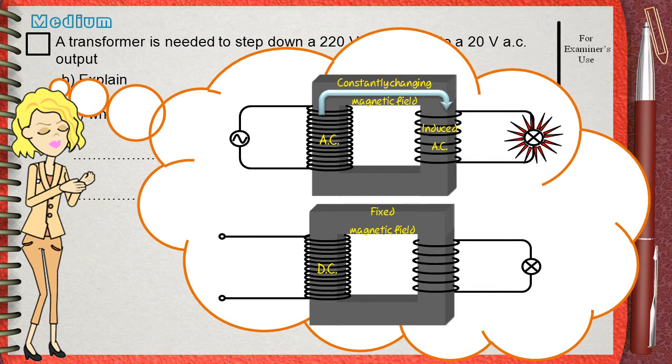Also this fixed magnetic field will move from primary to secondary. But there is a small problem. A fixed magnetic field causes nothing on the secondary coil.